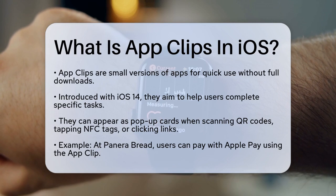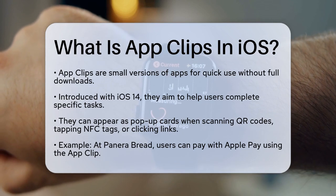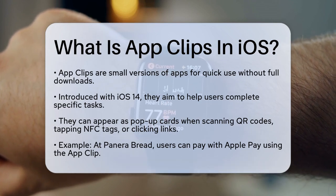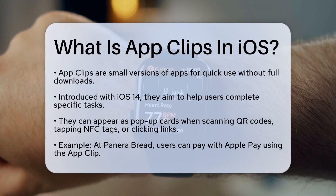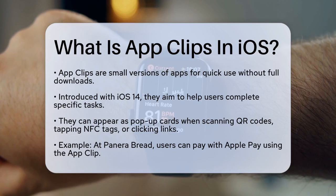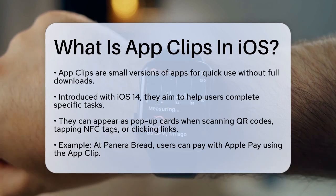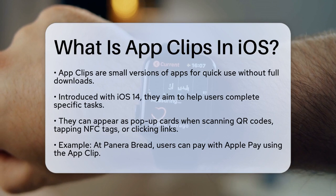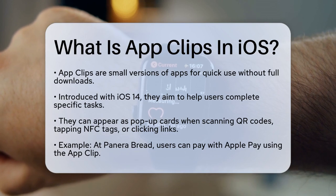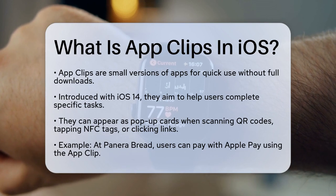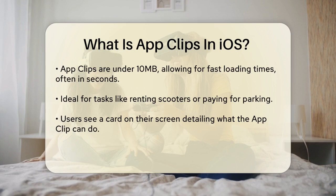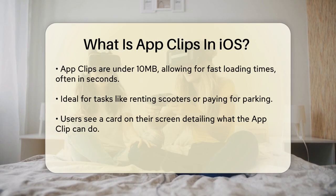Imagine you're at a coffee shop and you want to order a coffee, but you don't have the coffee shop's app on your phone. That's where App Clips come in. These clips can appear as pop-up cards when you need them, such as when you scan a QR code, tap an NFC tag, or click a link in a text message or on a website.